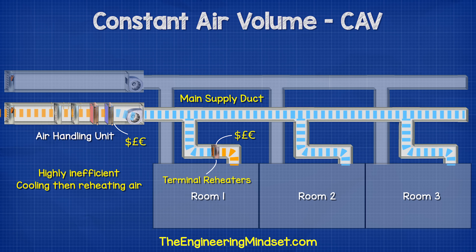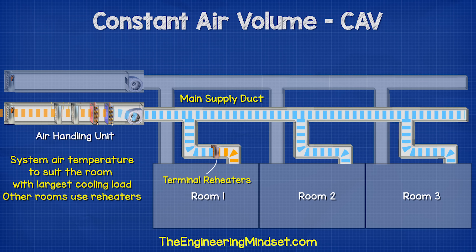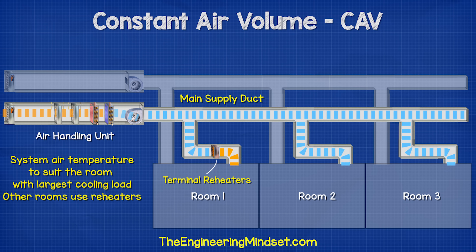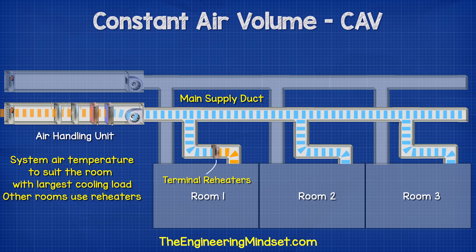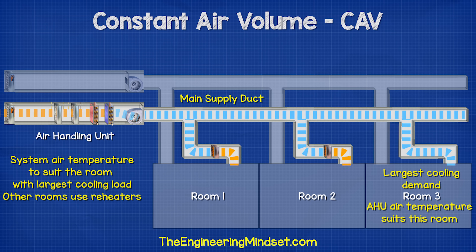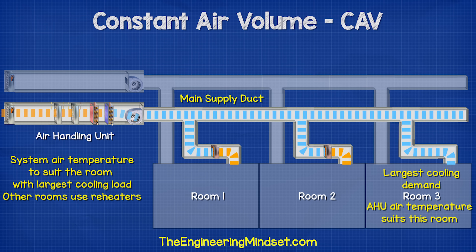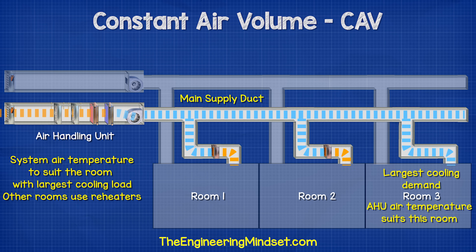Typically, the air temperature for this system is supplied at the coldest temperature possible which satisfies the room with the largest cooling load. For example, one room might have the largest cooling load so the system provides the air temperature to suit that particular room. The other rooms would then have to use reheaters because the air is going to be too cold.